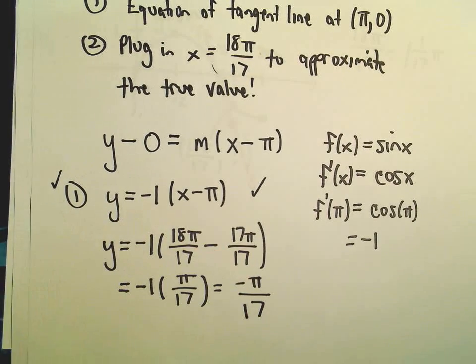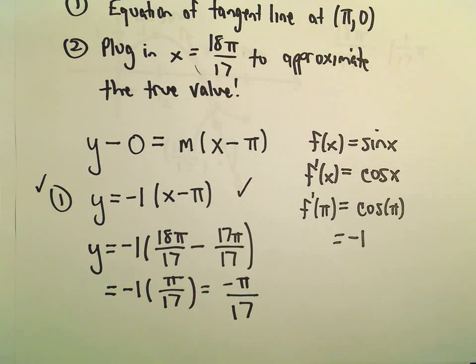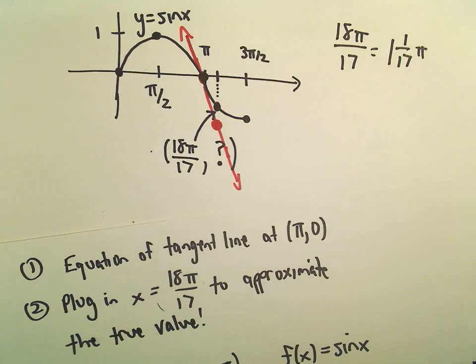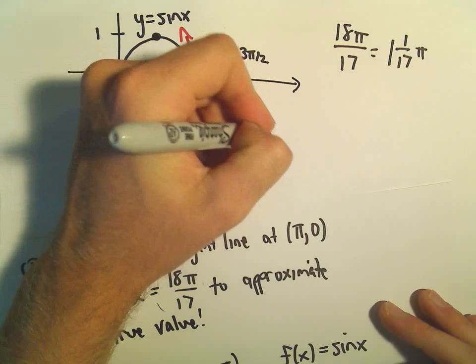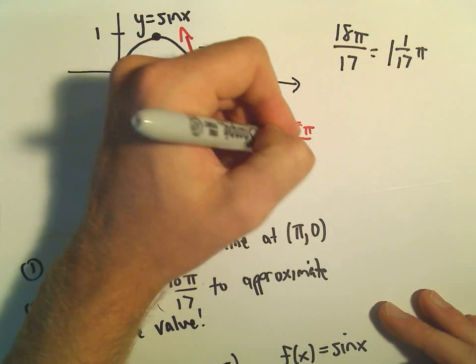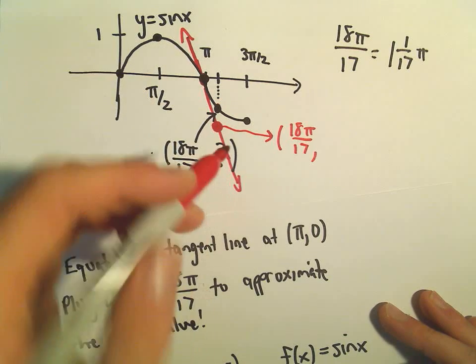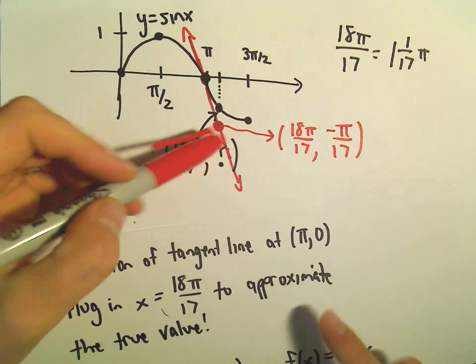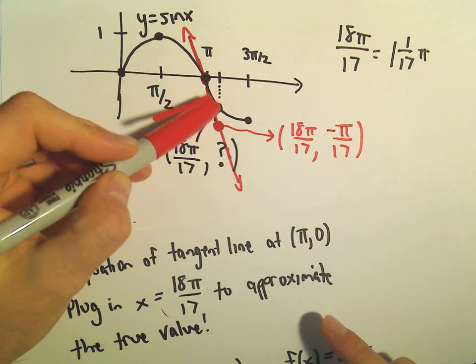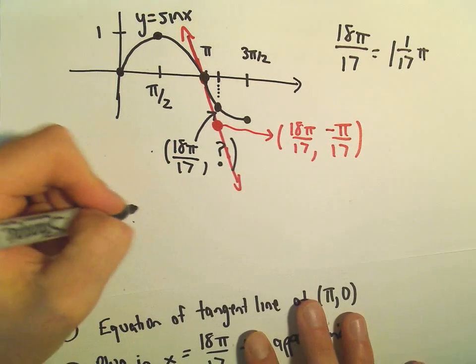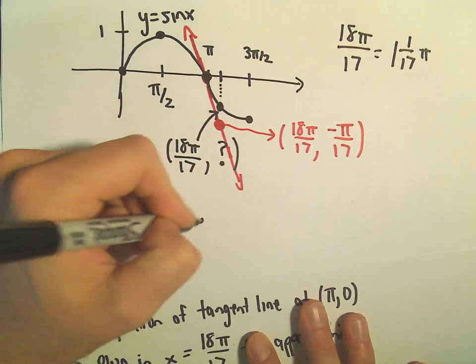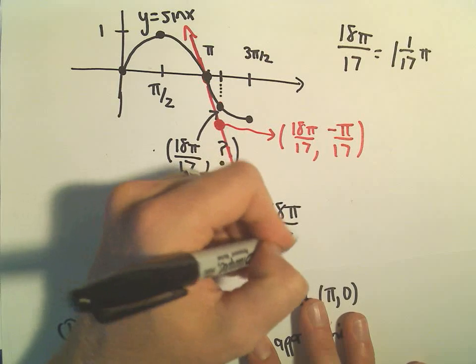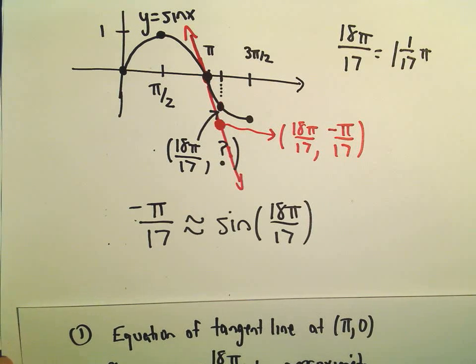So when we simplify that we just get negative π over 17 and now we're done. This is now the approximation. We've plugged in the value 18π over 17 into the equation of our line and we've got that that equaled negative π over 17. But again, the idea is the y value on the line is roughly equal to the true y value. So now we have our approximation. It says negative π over 17 is roughly equal to the true value, which would be sine of 18π over 17. And that's all there is to it.